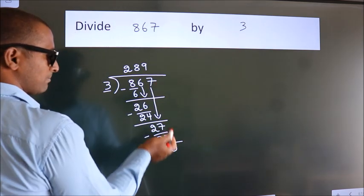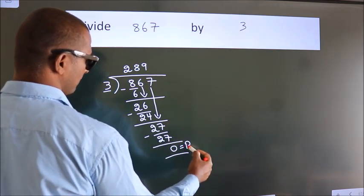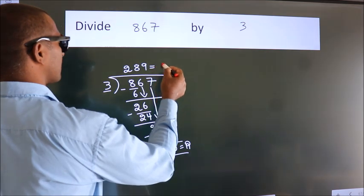No more numbers to bring down. So we stop here. This is our remainder. This is our quotient, 289.